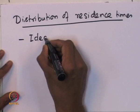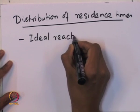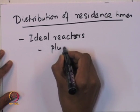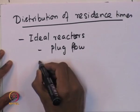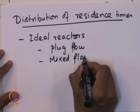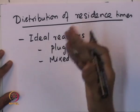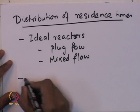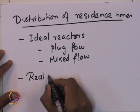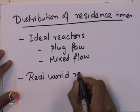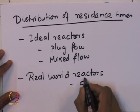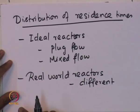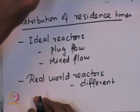The ideal reactors that we have looked at so far — the plug flow and the mixed flow reactors — are all ideal reactors. It turns out that real world reactors do not behave like plug flow or mixed flow reactors. Real world reactors behave differently, and it is important to diagnose and understand when they deviate from ideal behavior.